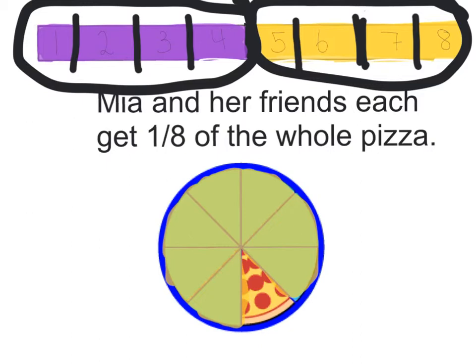And then I counted how many sections there were: one, two, three, four, five, six, seven, eight. So, that means that one of these is equal to one out of eight, or one eighth of a pizza.